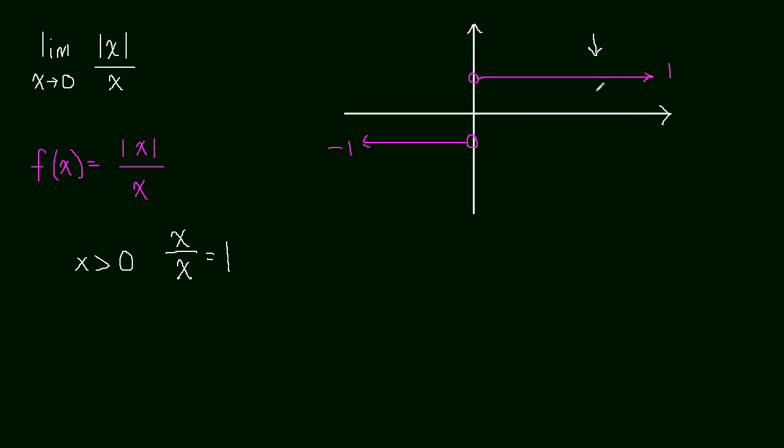So that's this right here. If x is less than 0, well, then the absolute value will return a positive x, or the positive value of whatever x is going to be, and the denominator will be negative. And a positive x over a negative x is going to end up being negative 1.